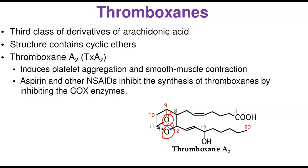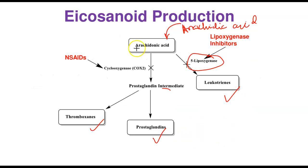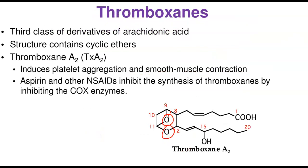Thromboxanes are the third class of eicosanoid derivatives of arachidonic acid. Their structure contains a cyclic ether group. The most common is thromboxane A2 (TXA2), whose main function is to induce platelet aggregation and smooth muscle constriction. Aspirin and other non-steroidal anti-inflammatory drugs inhibit thromboxane synthesis by inhibiting the COX enzyme, thus slowing the inflammatory and coagulation process. This concludes the lecture on lipids and biological membranes. Thank you for listening, and have a wonderful day.